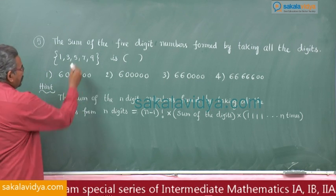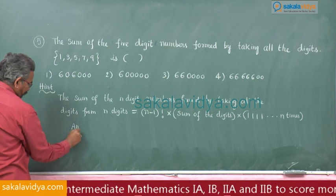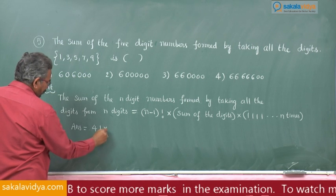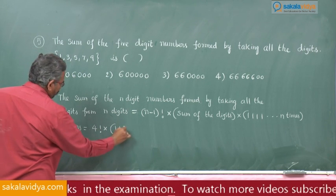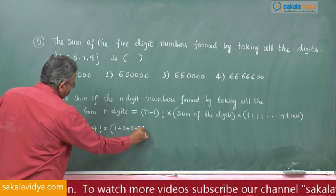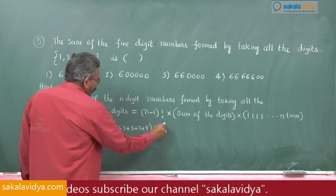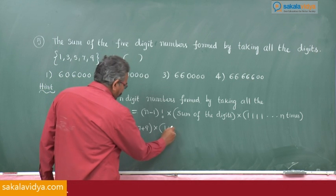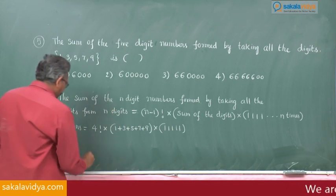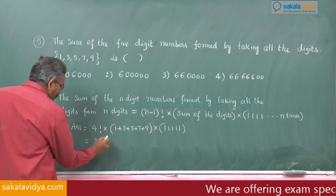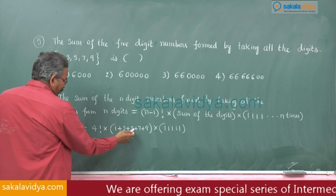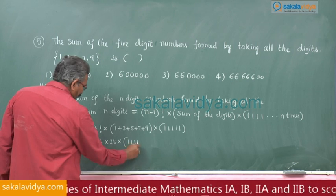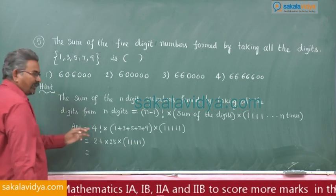Now, see here this answer is equal to, we can write answer here five, five minus 1, 4 factorial, sum of the digits 1 plus 3 plus 5 plus 7 plus 9 into, how many 1s should be written? 5 ones. 11111, this is 24 you know,